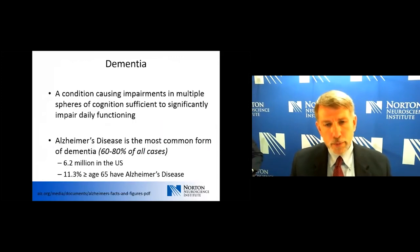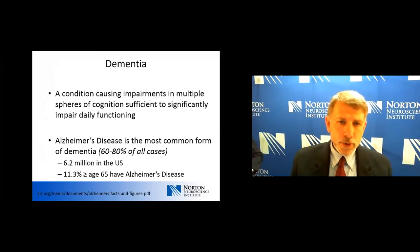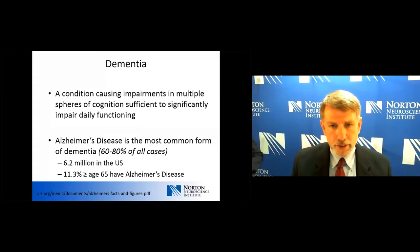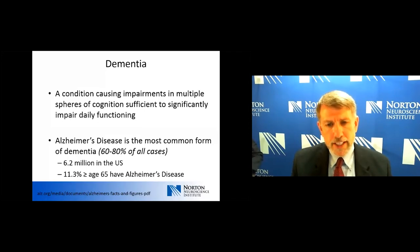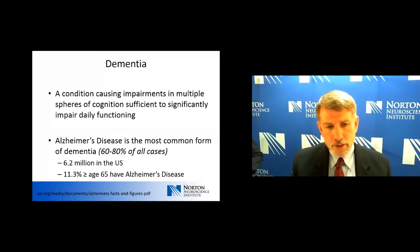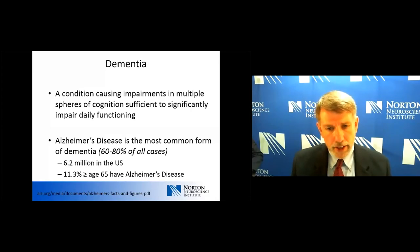Think of dementia as a broad umbrella term. It refers to a condition where we have impairments in multiple spheres of cognition — language, memory, executive function, and so on — to a degree that it significantly impairs day-to-day functioning. Alzheimer's disease is the most common form of dementia, with probably 60 to 80 percent of all cases related to Alzheimer's disease. That equates to just over 6 million in the United States alone, and somewhere over 11 percent of those aged greater than 65 in the U.S. likely have Alzheimer's disease.